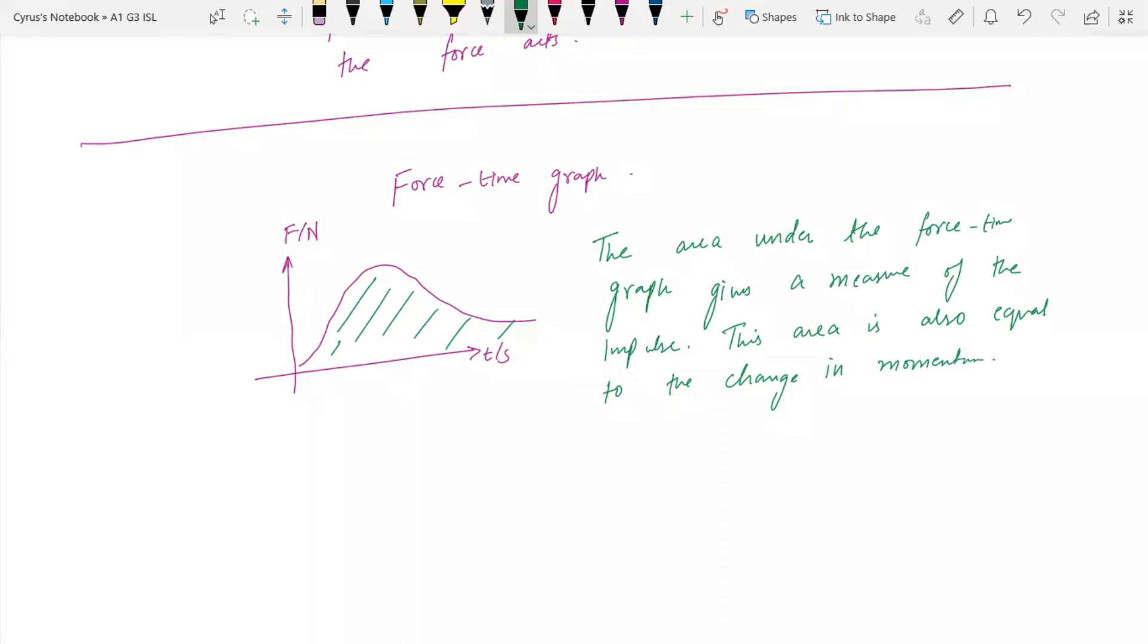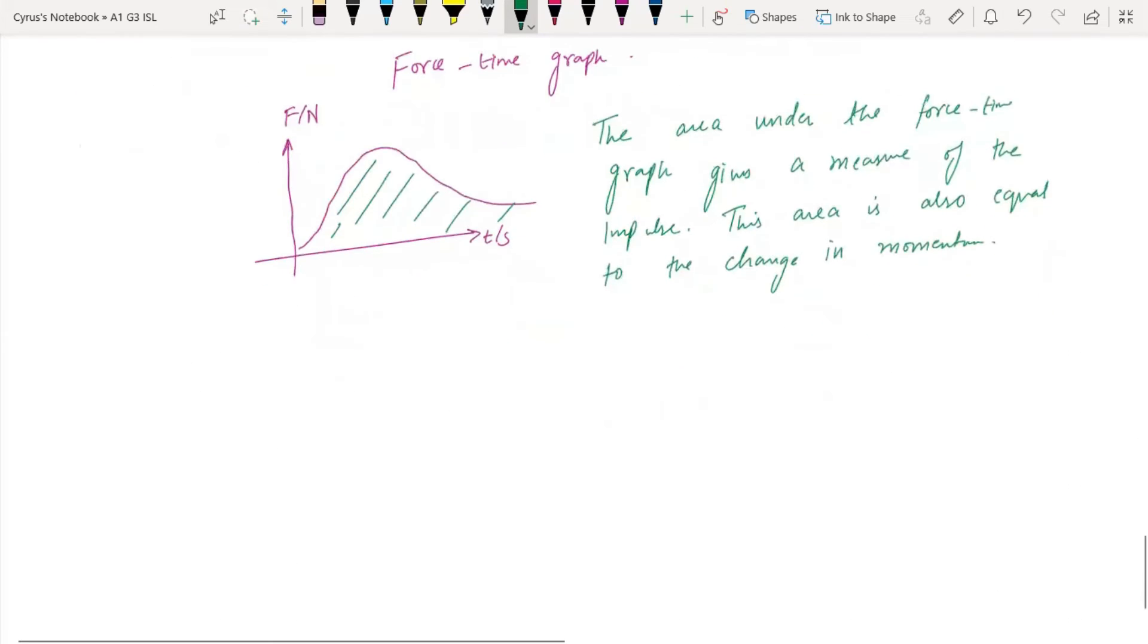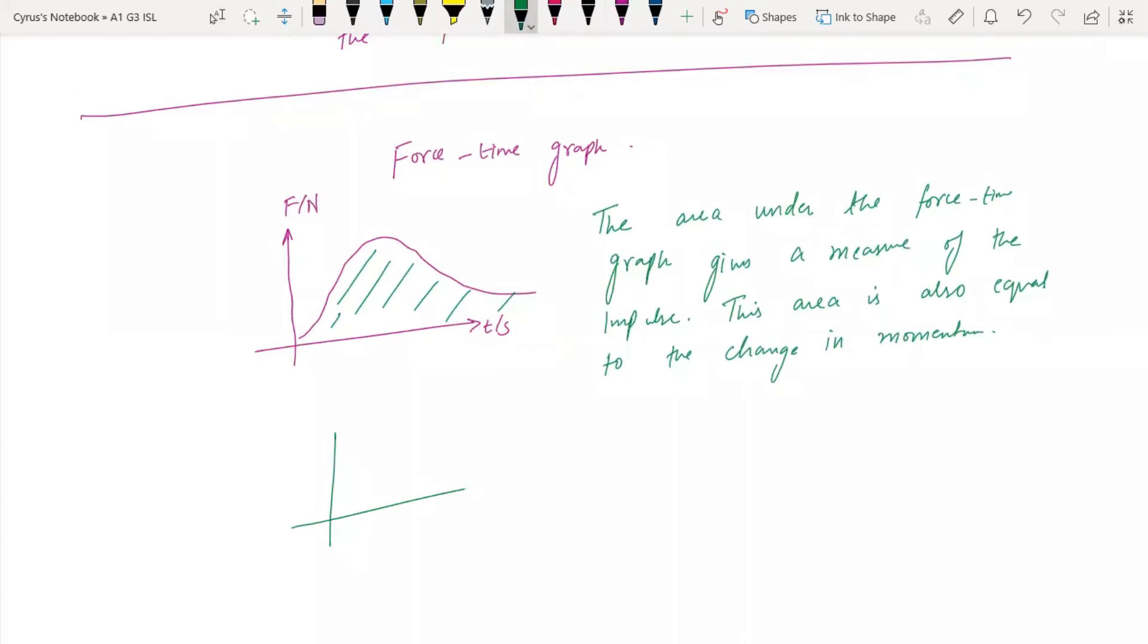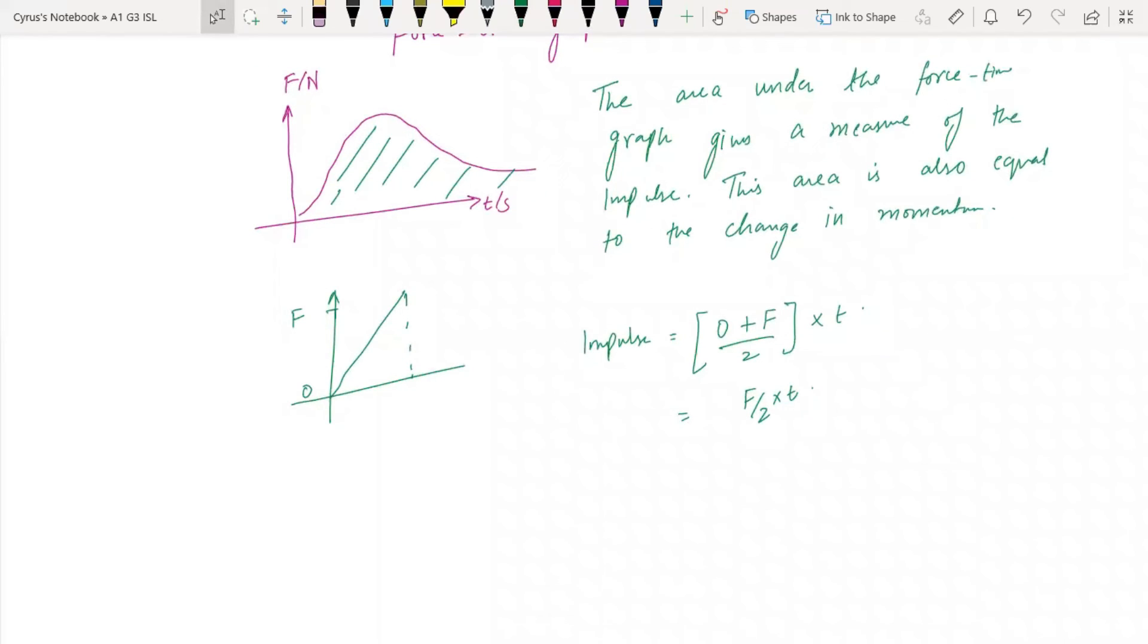This area under the force-time graph can also be calculated. If you have a variable force from 0 to F, the impulse is force into time. But this is a variable force, so you take the average value, which is 0 plus F over 2. And if you calculate the area, area is half into base into height, which is base T, height is F. You get the same thing.